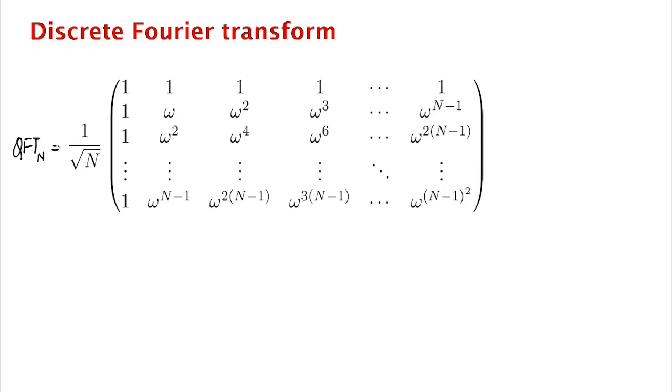So here's what QFT sub n, this operator looks like. It's normalized 1 over square root n. It's an n by n matrix whose entries are the nth roots of unity. So omega is e to the 2 pi i over n, cosine 2 pi over n plus i sine 2 pi over n.